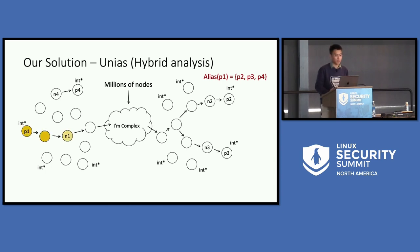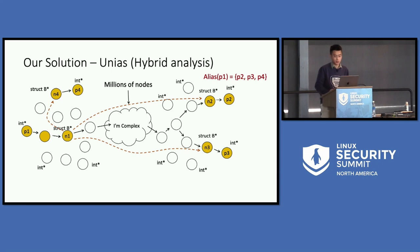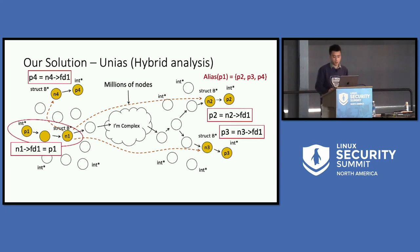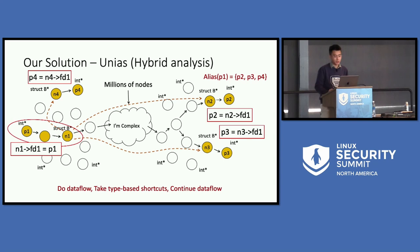Starting from p1, at the beginning we are in dataflow mode to trace the dataflow. But instead of tracing the dataflow all the way down, we look for a suitable time to switch. For example, at node n1, which is a struct B pointer, with the insight from type-based methods — just like taking a shortcut — we switch to type mode and teleport the dataflow to other struct B pointer nodes and continue the dataflow there. The dataflow from p1 to n1 is not a trivial integer-pointer cast to a struct B pointer; it could be that p1 is actually an integer pointer field of struct B. Correspondingly, those teleport terminals are also the same field of struct B. At a high level, we do dataflow analysis by default, and meanwhile we look for a good chance to take the type-based shortcut, then continue the dataflow analysis afterwards.